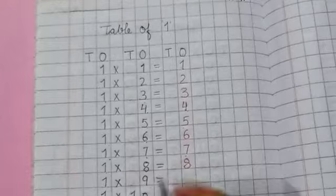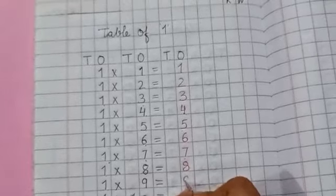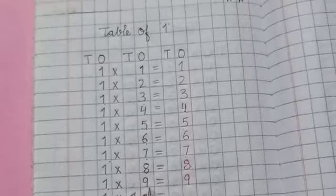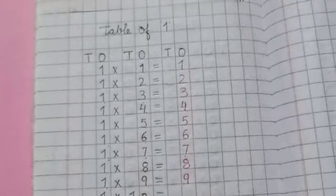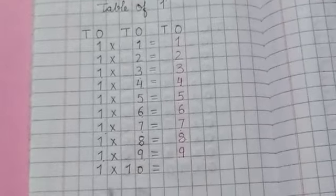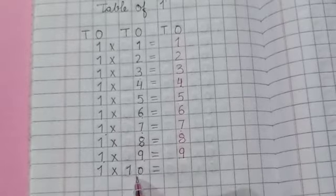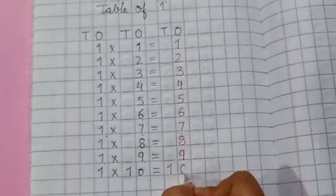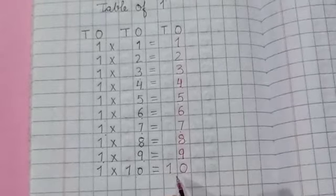One, nines are nine. One, nines are nine. One, tens are ten. One, tens are ten.